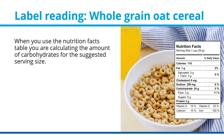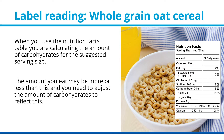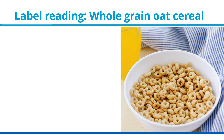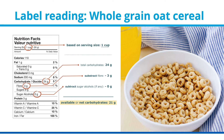When you use the nutrition facts table, you are calculating the amount of carbohydrates for the suggested serving size. The amount you eat may be more or less than this, and you need to adjust accordingly. In this example, the nutrition facts table tells us that the suggested serving size of whole grain oat cereal is 1 cup. The amount of carbohydrates listed is 24 grams. We then subtract the 3 grams of fiber for a total of 21 grams of available carbohydrates per 1 cup of cereal. In this case, there are no sugar alcohols present, so 1 cup has 21 grams of carbohydrates.